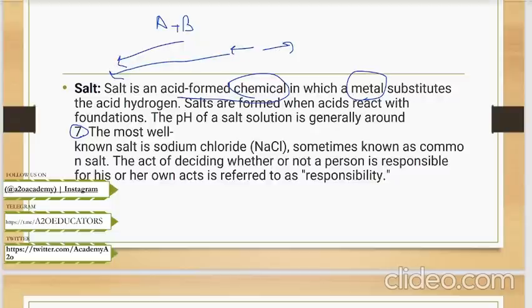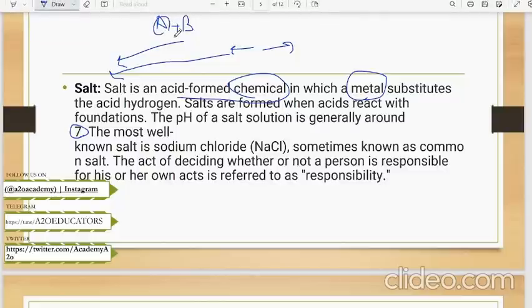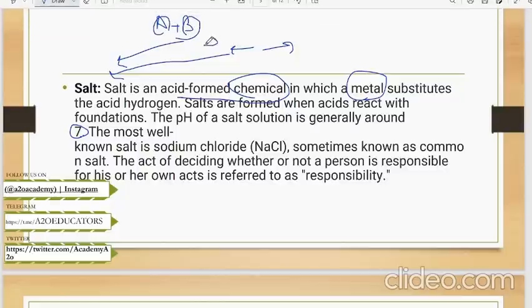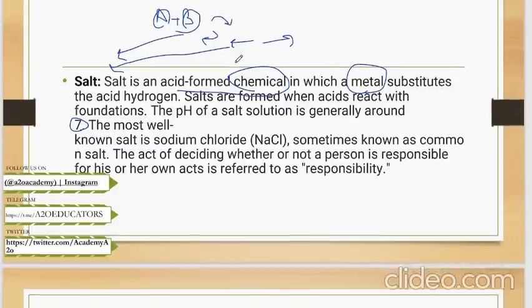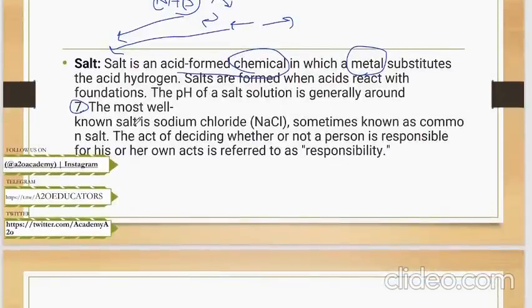But it is possible that acid is much stronger than base. Then it would result in a salt with less than 7 pH. If base is stronger, then more than 7 pH. The most common salt we know is common salt, table salt. That is sodium chloride, NaCl, sometimes known as table salt.